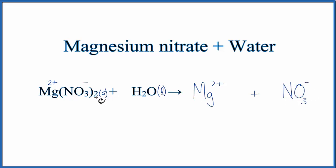This two here, though, tells us that we have two nitrate ions, so we do need to put a coefficient in front of two to show that.